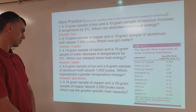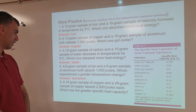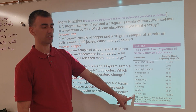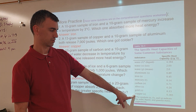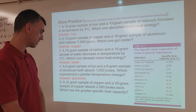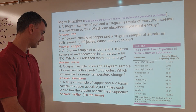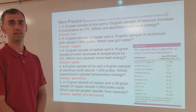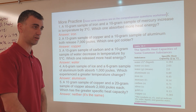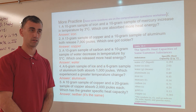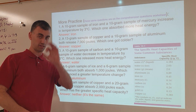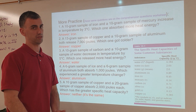Finally, the last one: 10 grams of copper and 20 grams of copper both absorb 2,000 joules each — which has the greater specific heat capacity? Notice it just says copper — it doesn't tell you different materials. Specific heat capacity does not depend on the size of the sample. The answer is it's a trick question — neither one has a greater specific heat capacity. They are both the same material, and specific heat capacity is the same regardless of sample size. Copper is no exception. Hopefully that helps.